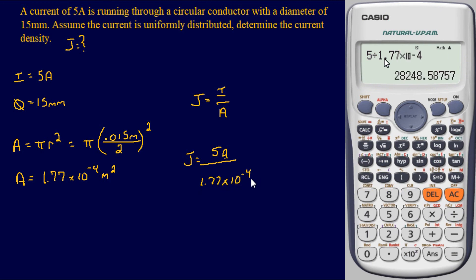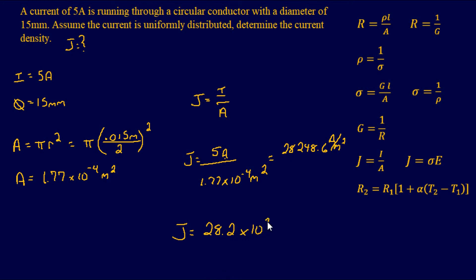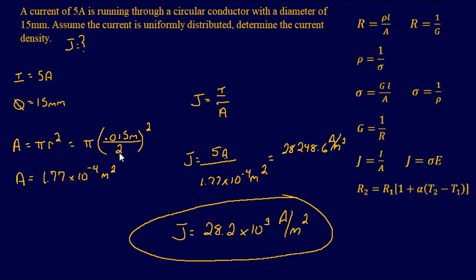That gives a final answer of 28,248.6 amps per meter squared, or cleaning that up: 28.2×10³ amps per meter squared. That is our current density for that conductor. Hopefully you learned enough information here to be dangerous — hope you all have a good day.